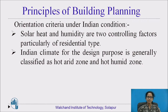We will consider the orientation criteria under Indian conditions. Solar heat and humidity are the two controlling factors, particularly for the residential type. The Indian climate, for design purposes, is generally classified as the hot arid zone and the hot humid zone. According to this, India can be divided into zones from a climate point of view: the hot humid zone and the hot arid zone.